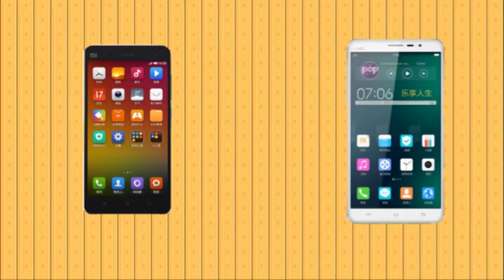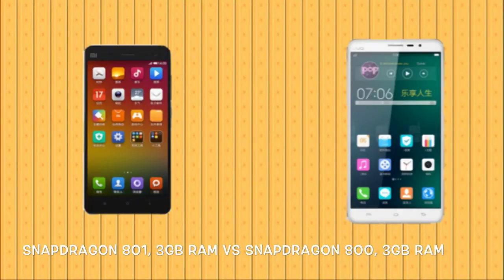In terms of internal hardware, the Mi 4 comes with a Snapdragon 801, whereas the X-Play 3s comes with a Snapdragon 800, 4 cores clocked at 2.3 GHz. The GPU is the same on both devices — Adreno 330. In terms of RAM, both devices come with 3GB of RAM.